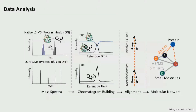Now, since we have the metabolomics run from those samples, we can start pairing them. In our bioinformatics pipeline, we do feature extraction of both the native run and the metabolomics run, then do some matching by mass and retention time, and organize those putative binders in our molecular network — since we also have MS2 spectra from the metabolomics run.